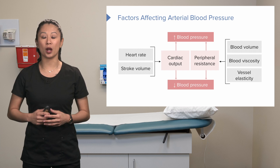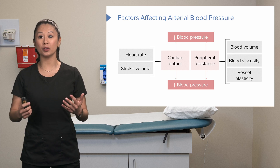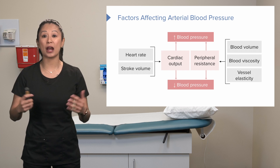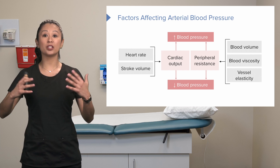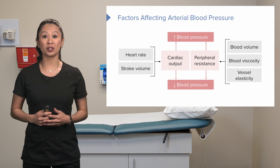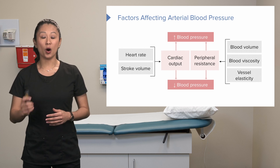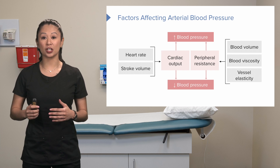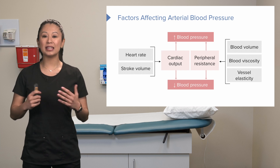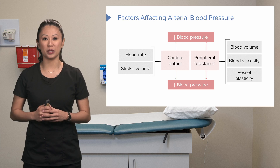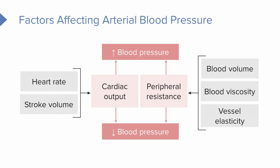Other factors affecting peripheral resistance include blood volume, blood viscosity, and vessel elasticity. Blood volume is the amount of blood circulating in your body — we need a certain amount to perfuse our organs. Blood viscosity refers to how thick the blood is, determined by the number of red blood cells, otherwise known as hematocrit. Vessel elasticity also matters — smoking, for example, can harden and restrict vessels, affecting blood pressure.